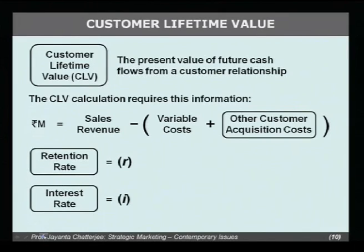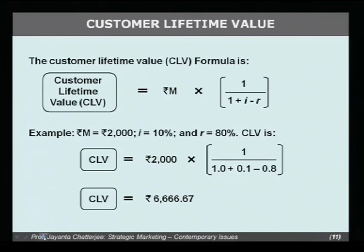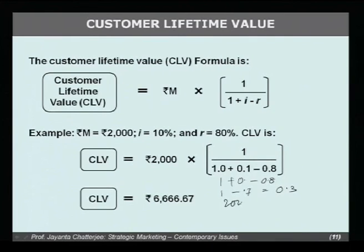R is the retention rate, I is the interest rate, and margin is defined as sales revenue minus variable costs. This calculation uses 1 plus 0.1 minus 0.8, which equals 1 minus 0.7, equaling 0.3. Then 2000 divided by 0.3 leads to 6,666.67 as the customer lifetime value.